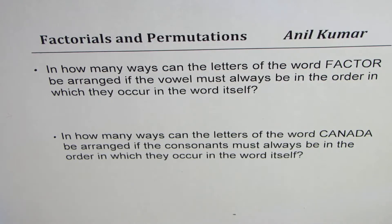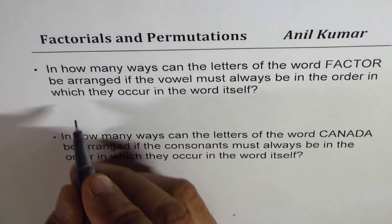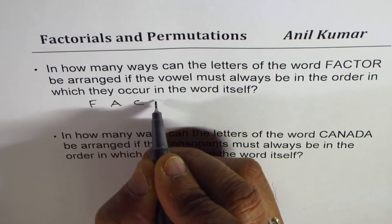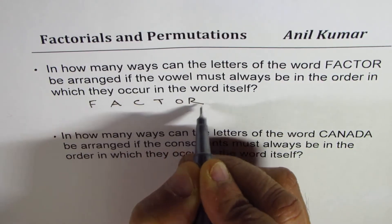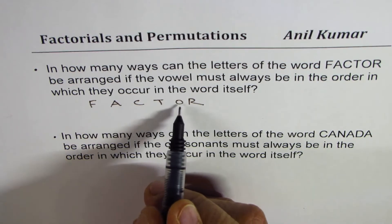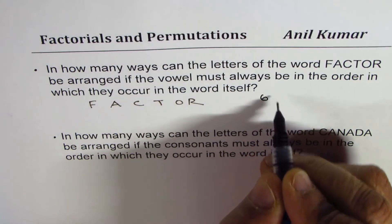Let's look into these questions one by one. So we'll look into factor first. F-A-C-T-O-R. So there are 1, 2, 3, 4, 5, 6 letters in this. So we have 6 letters.